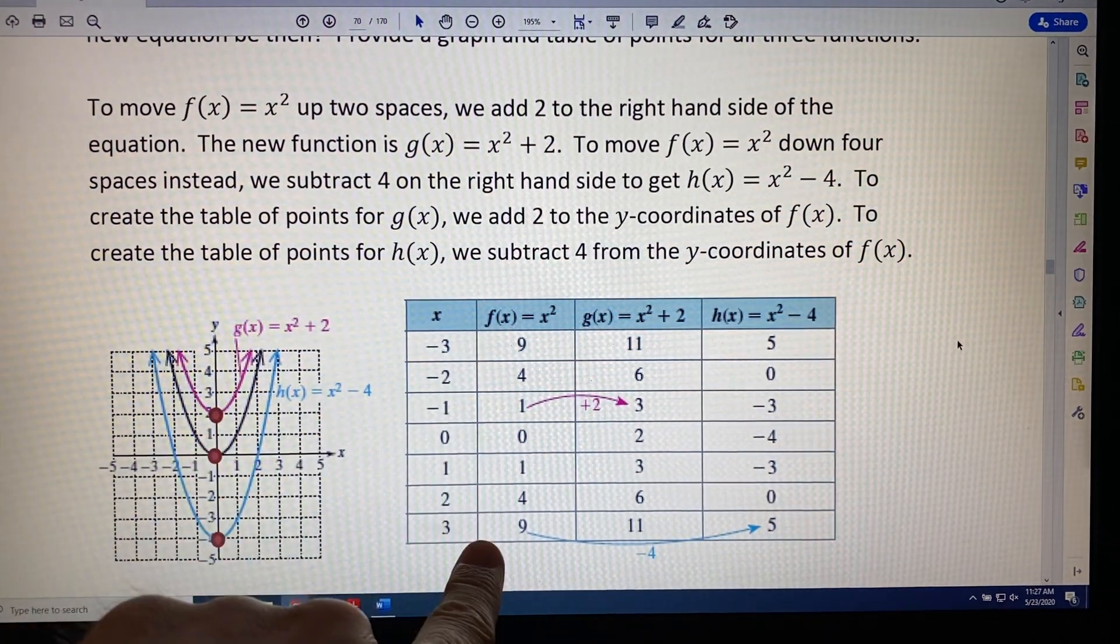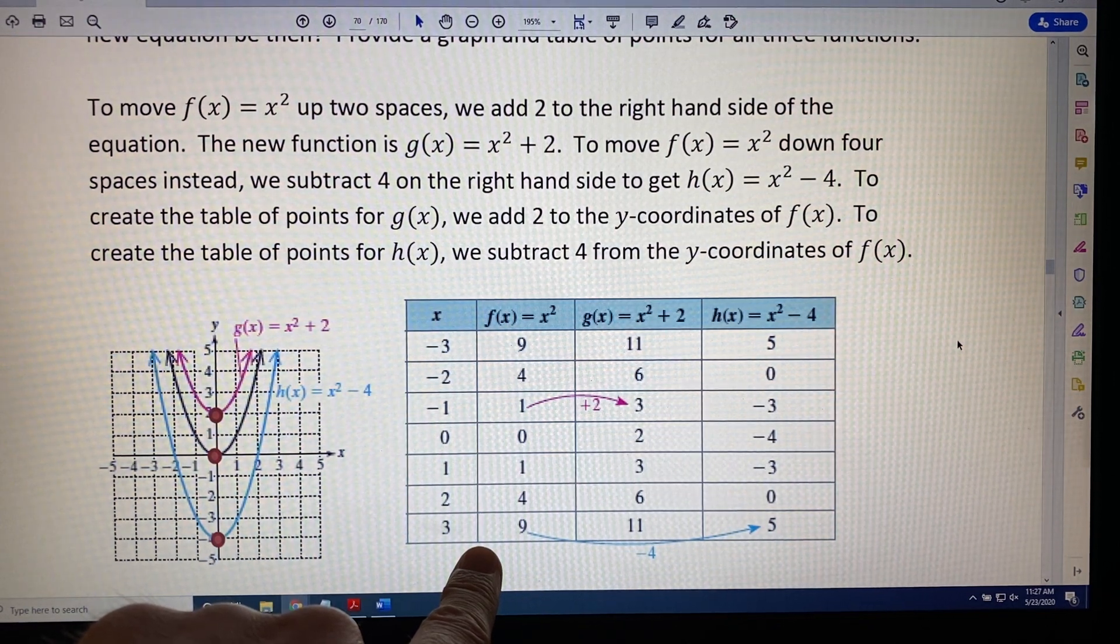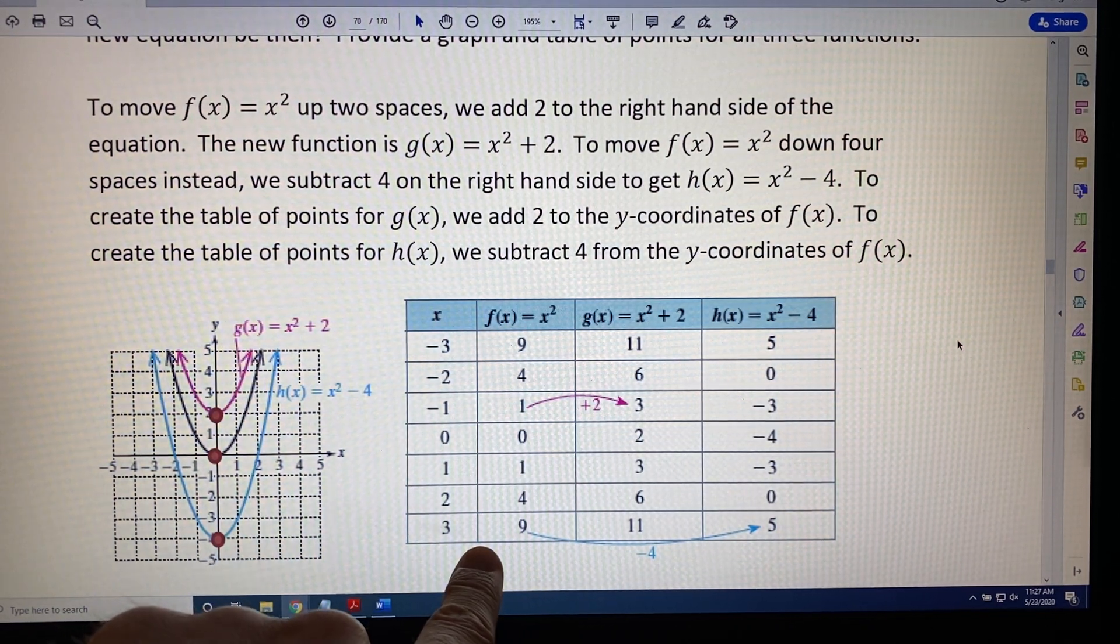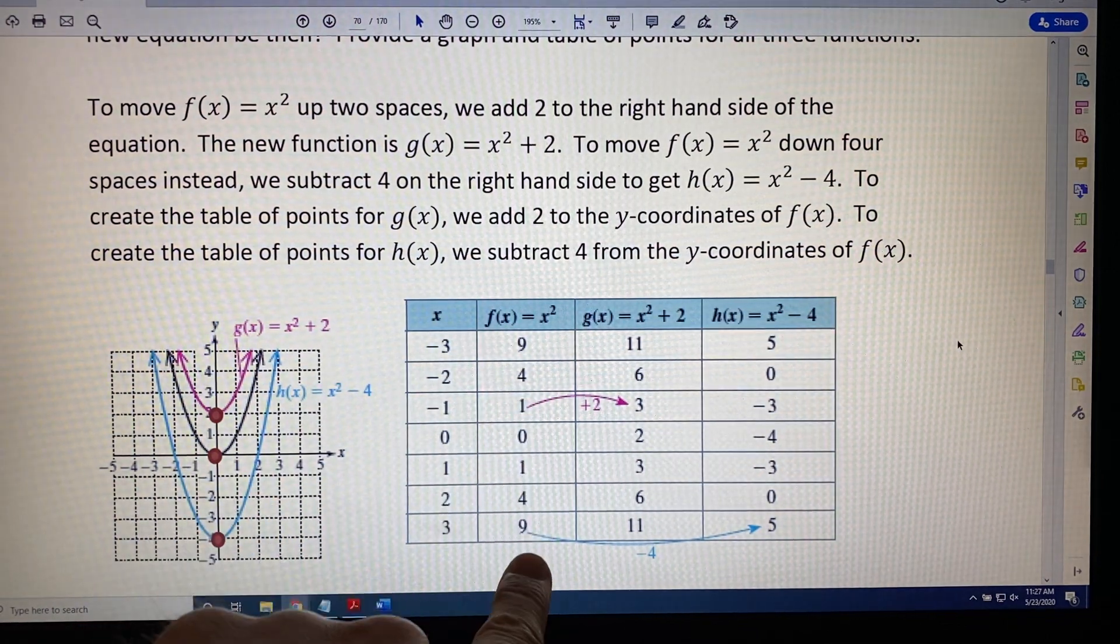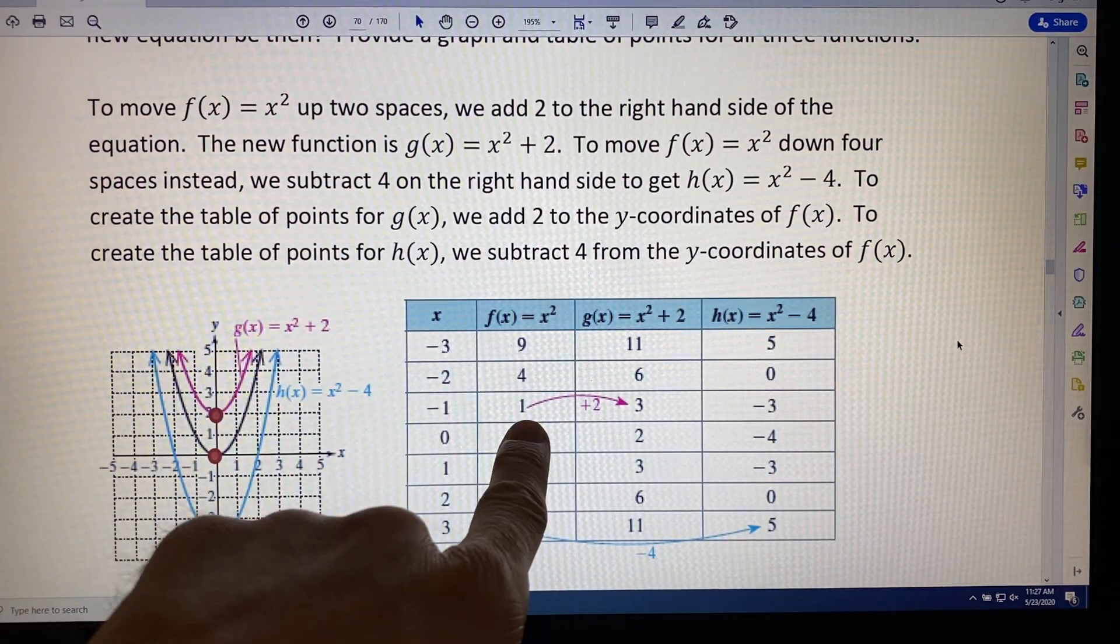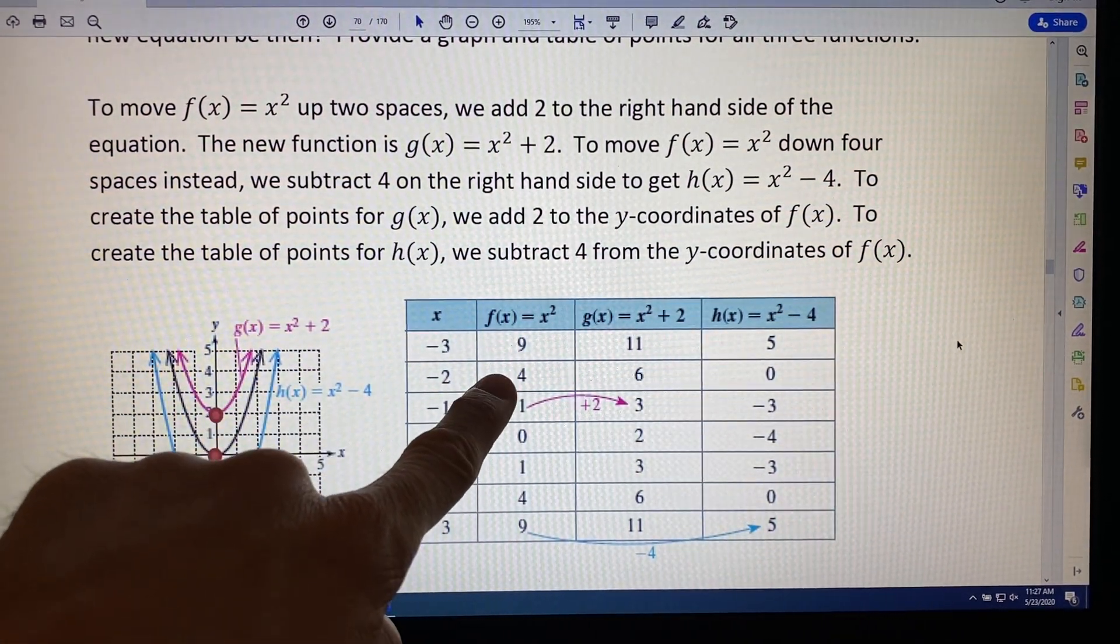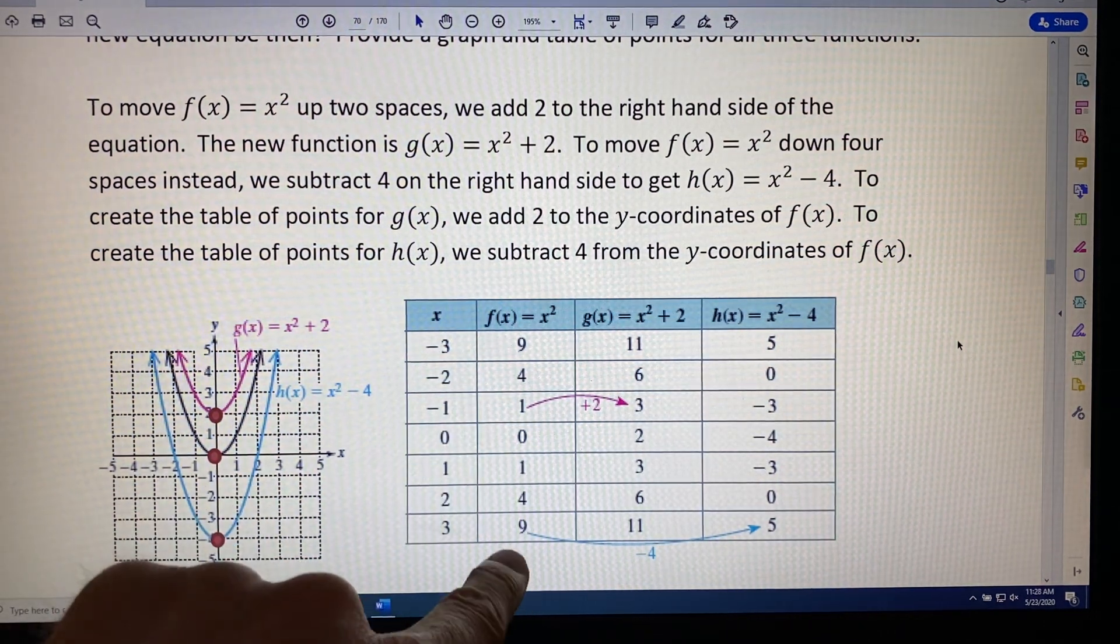To transform these coordinates, we have to understand that when a graph moves up two spaces, all of the y coordinates, which are shown here in this column, are adding 2. Notice the little arrow here with the add 2. So, 9 + 2 = 11, 4 + 2 = 6, and so on and so on down the table.